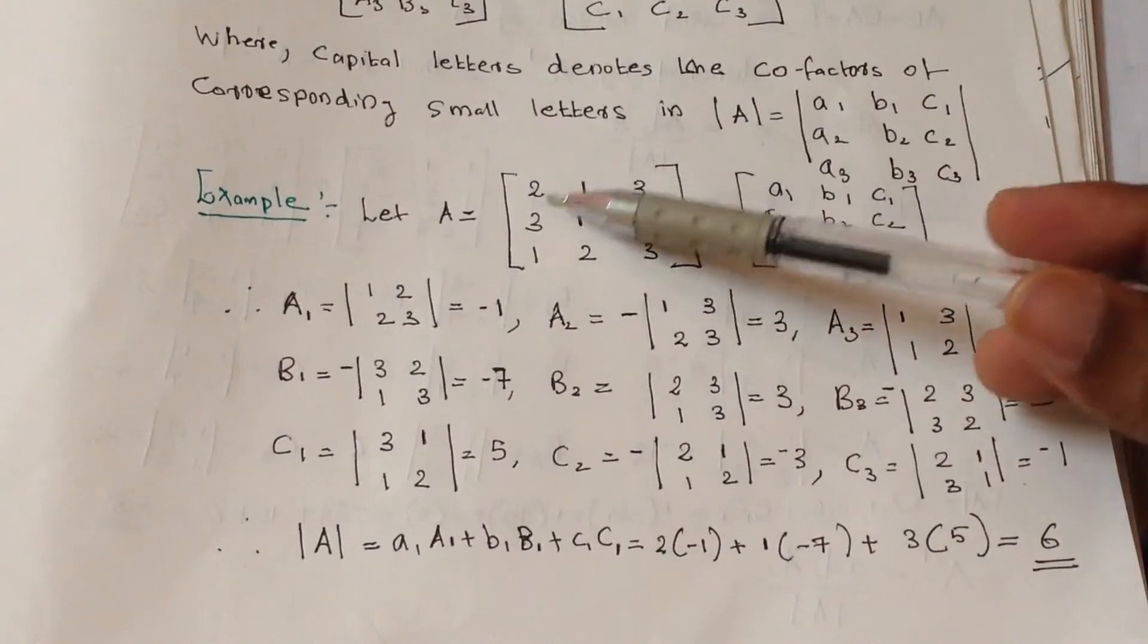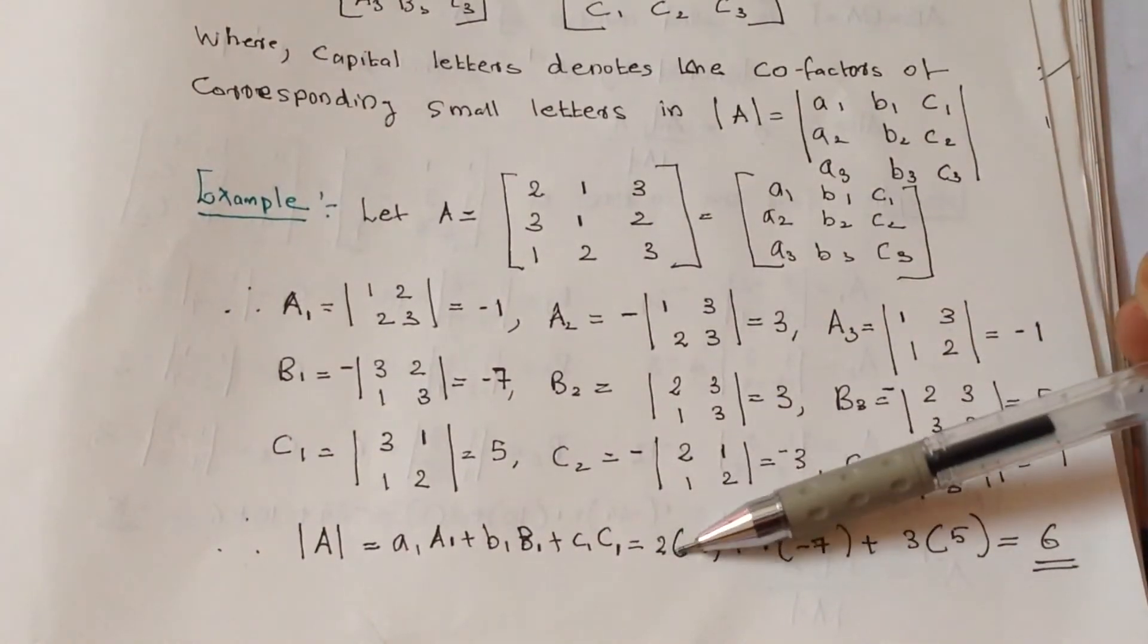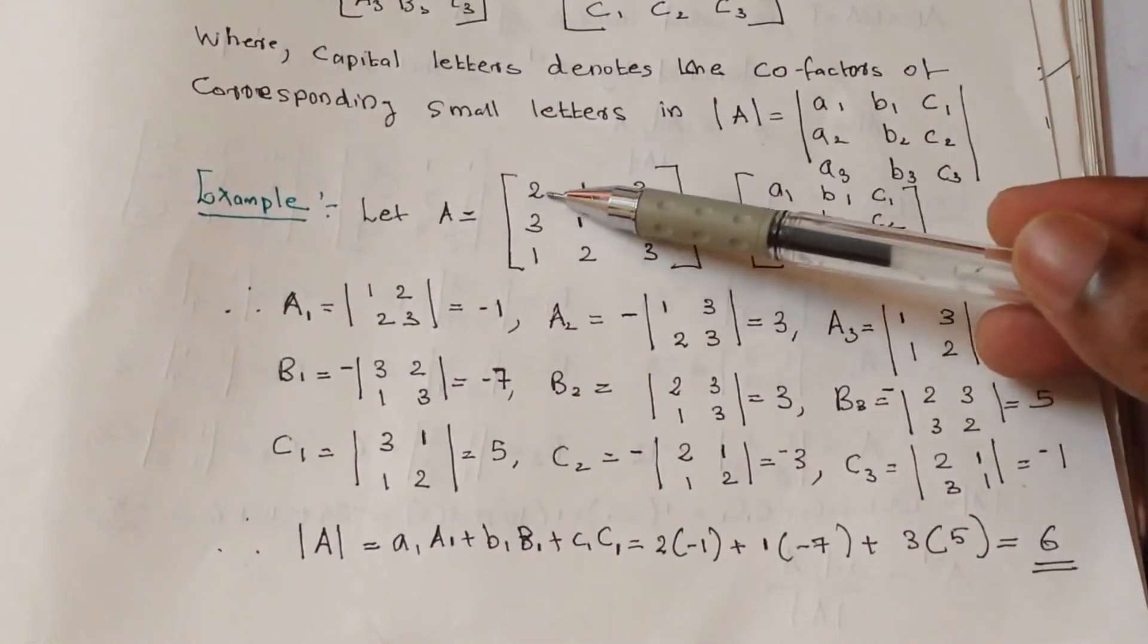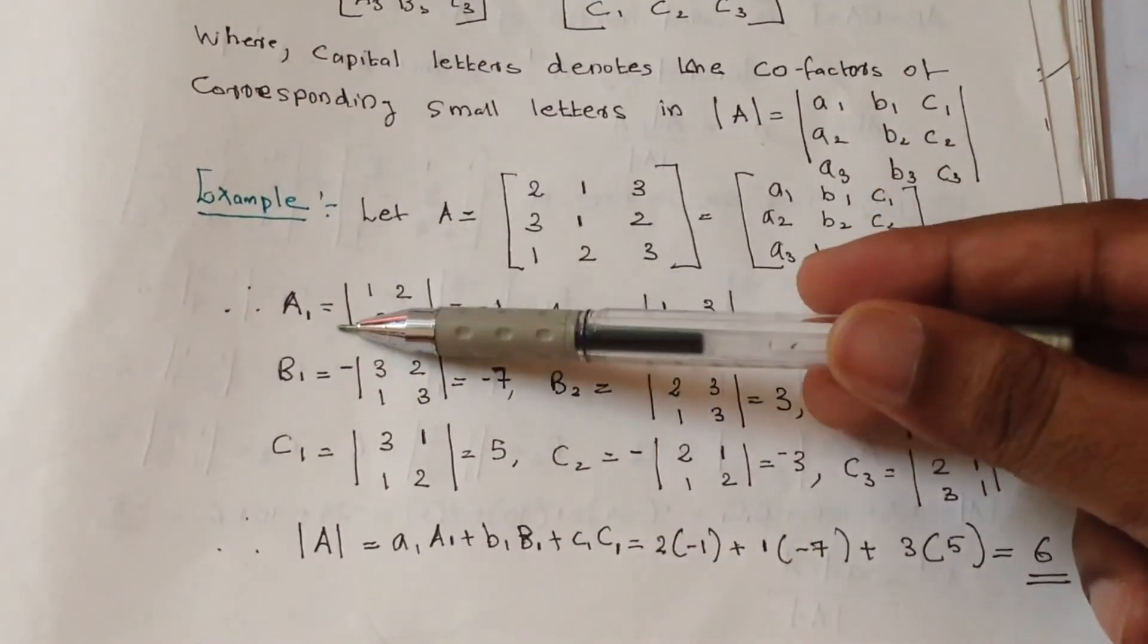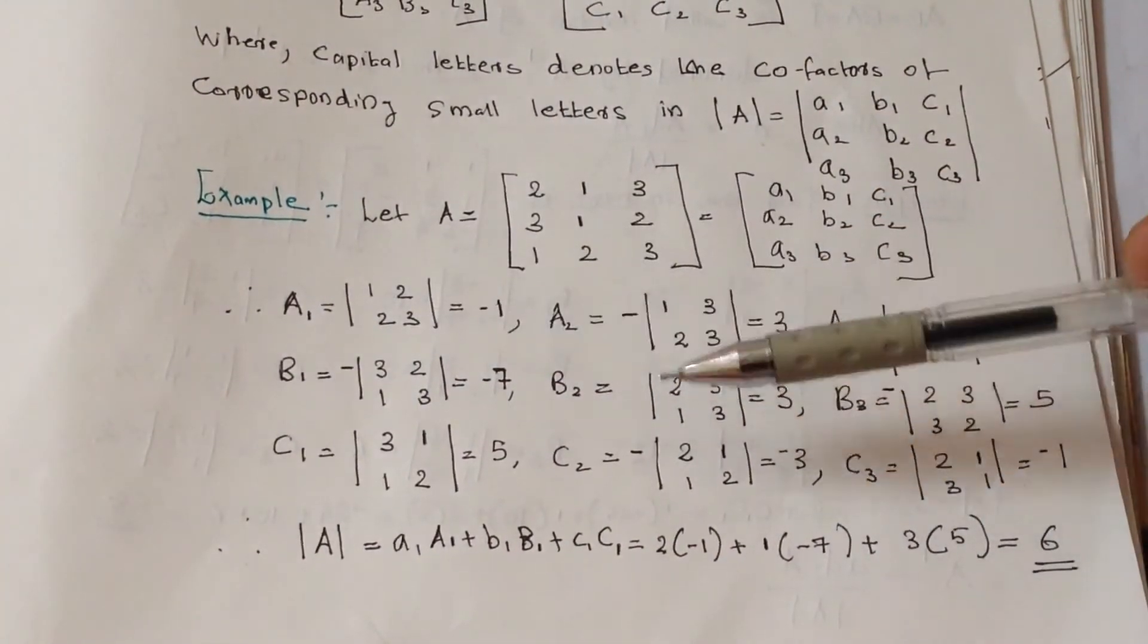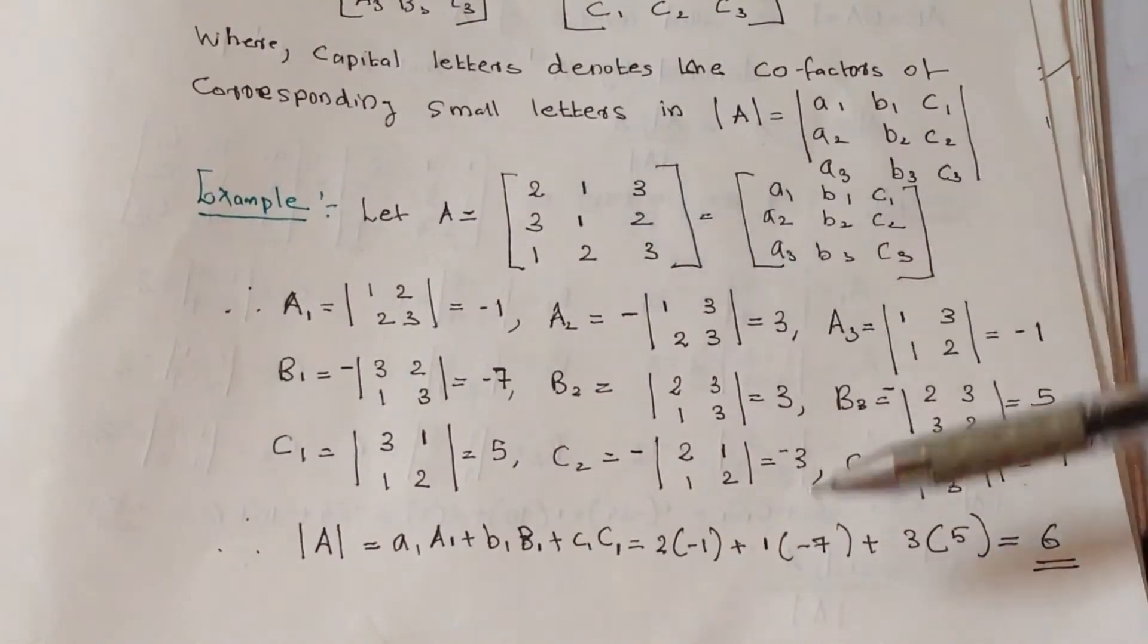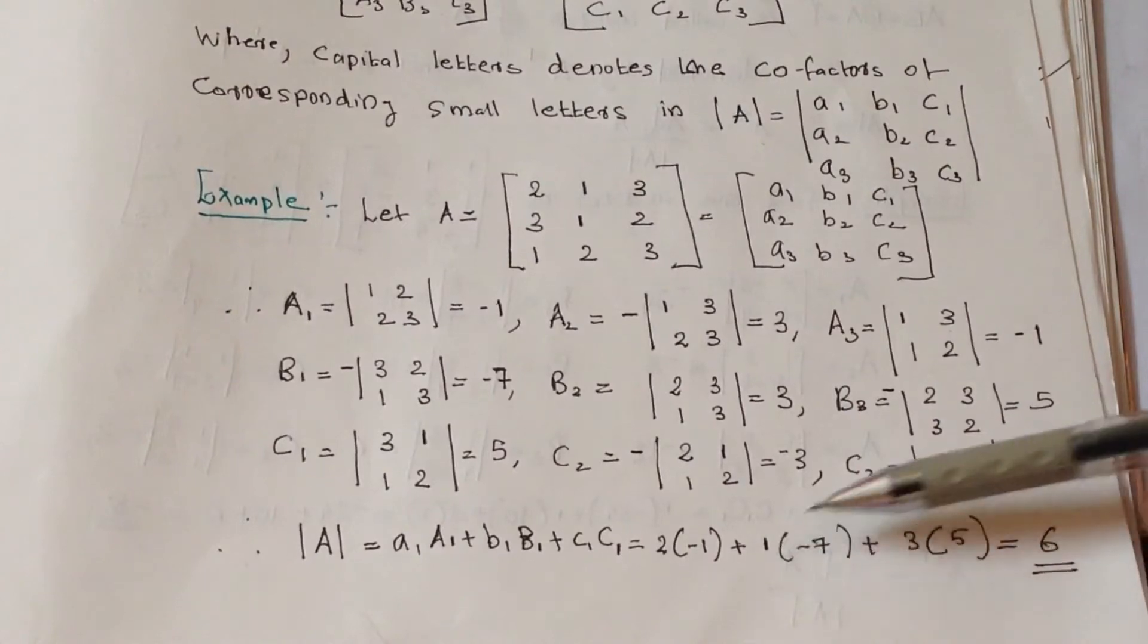We'll be taking the determinant 2 1 3. What is small a1? It is 2, into the capital A1. The cofactor A1 is minus 1, so 2 into minus 1, plus the second cofactor: 1 is the second one.